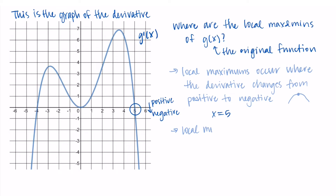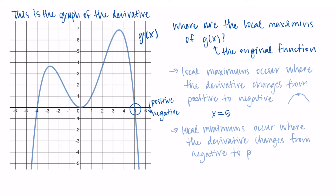Local minimums occur where the derivative changes from negative to positive. We're looking for places on the graph of g prime where outputs change from negative, below the x-axis, to positive, above the x-axis. I'm seeing that this happens at x equals negative 4 — we have negative outputs that become positive outputs. At negative 4, we have an output of 0, meaning the derivative at negative 4 is 0, which is what we need for a local max or min. We're sure it's a local minimum because we're changing from negative to positive at that value.